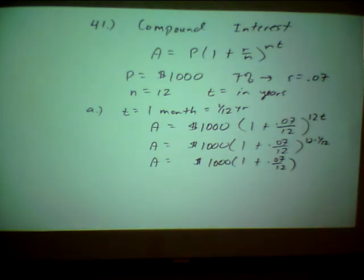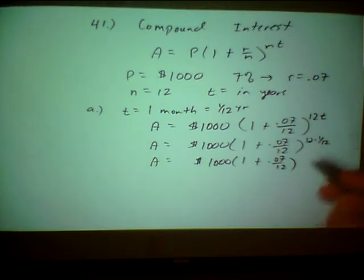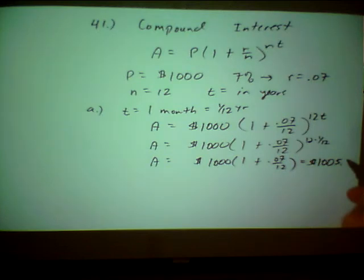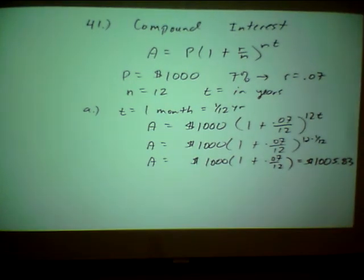So I still have to grab my calculator. I take 0.07 divided by 12 equals. I add that to one. So I'm over here to the side, punching this in my calculator. Then I multiply it times 1,000. And I think they said round to the nearest cent. So when you do that, you end up with $1,005.83. So in one month, you basically made $5.83.